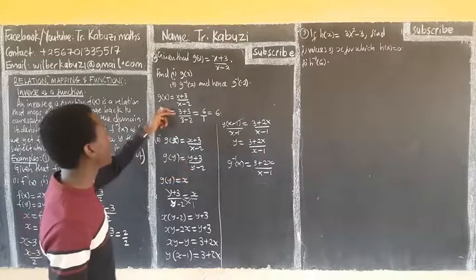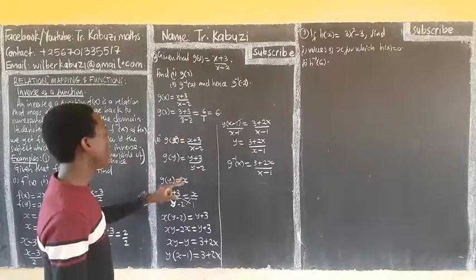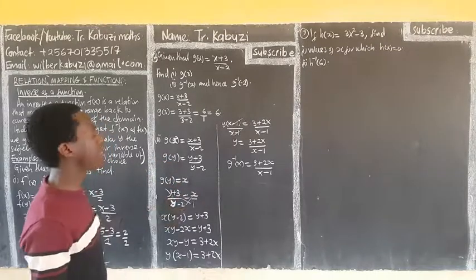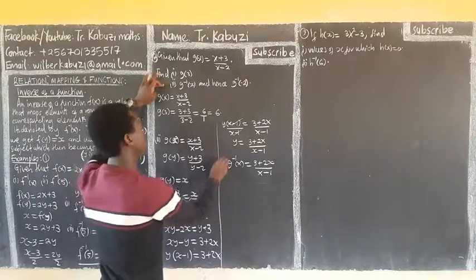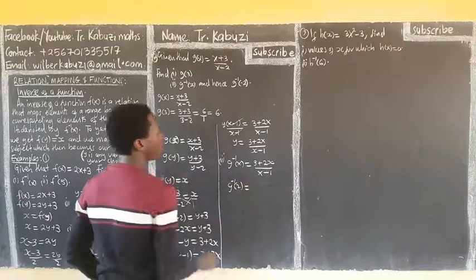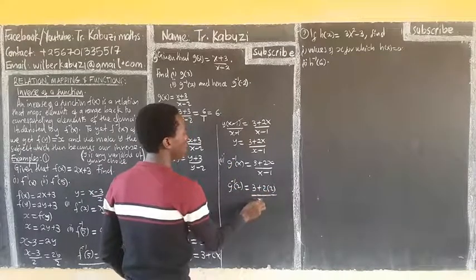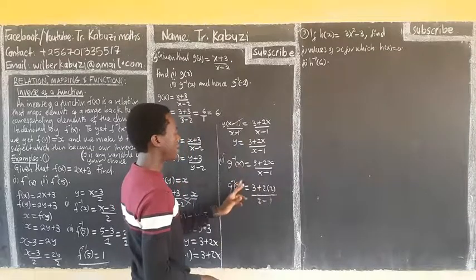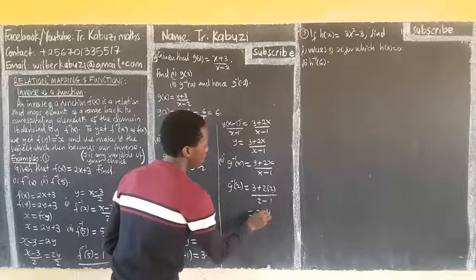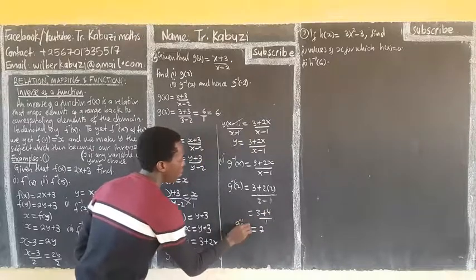So always, the variable we are having, we replace x with a variable y. Then we equate that expression to x and make y the subject. Now this is my answer for part 2. Then for g inverse of 2: where there is x I put 2. So I have 3 plus 2 times 2 over 2 minus 1, which gives 3 plus 4 over 1, which equals 7. So my g inverse of 2 is 7.